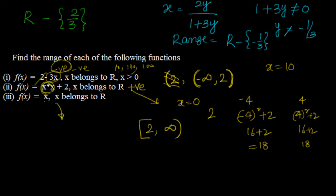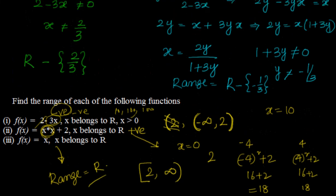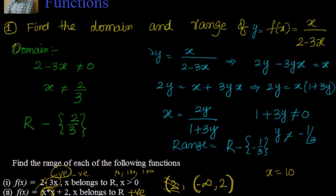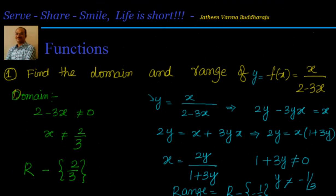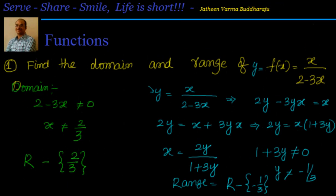The last one is very simple: f(x) = x, x belongs to R. There are no constraints on the domain, so there are no constraints on the range either. The range is simply R. Those are some simple examples related to finding the domain and range of functions. Thanks for visiting — see you in the next session, bye for now.